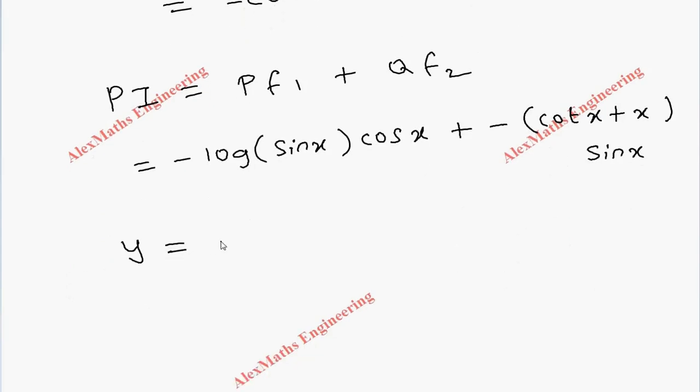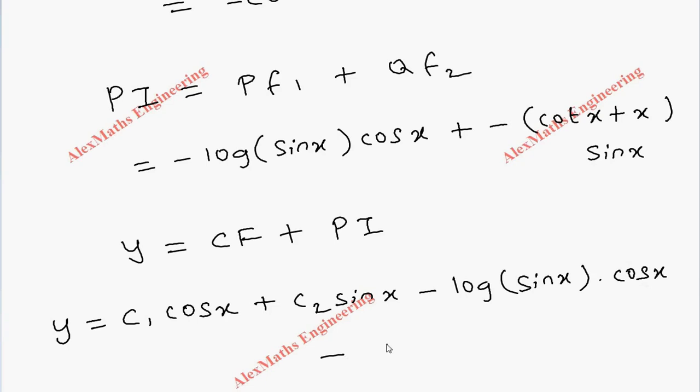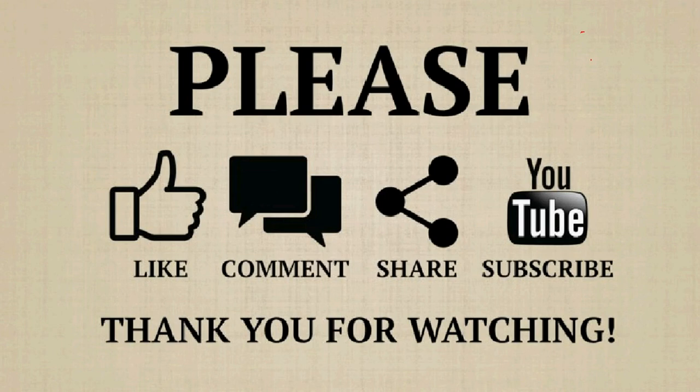Y = CF + PI. So Y = c₁cos x + c₂sin x - log(sin x)·cos x - (cot x + x)·sin x.